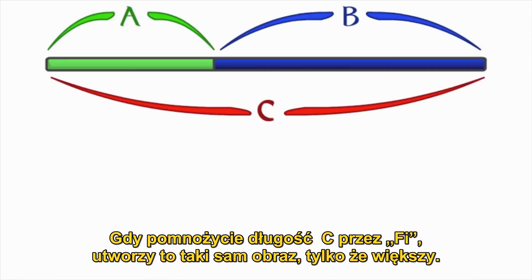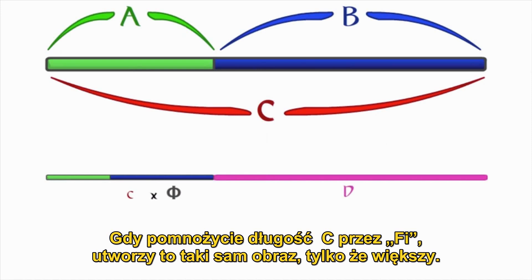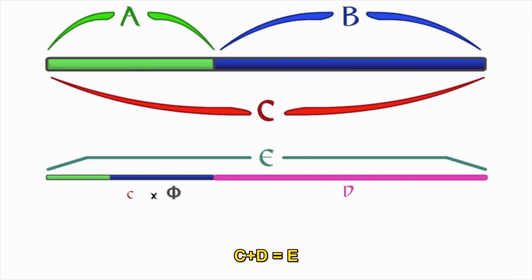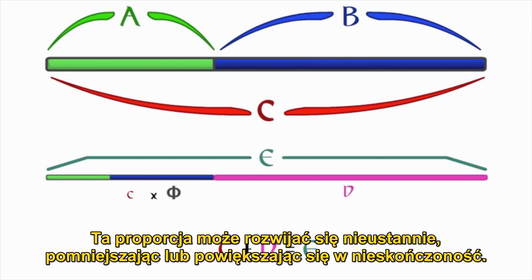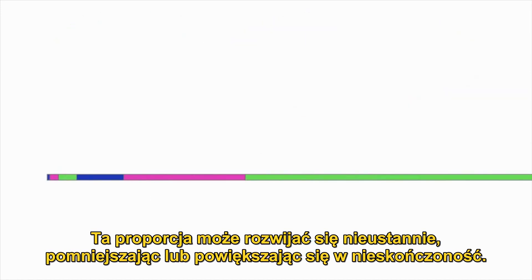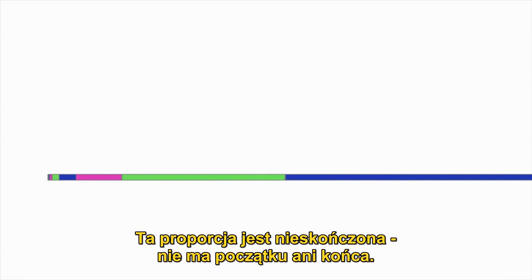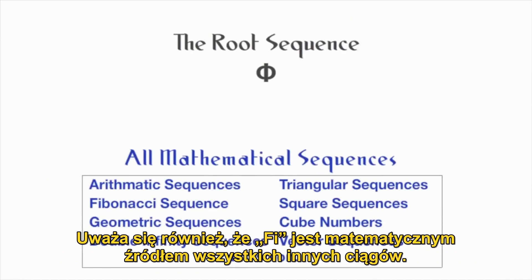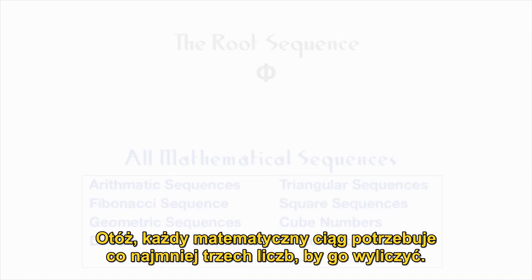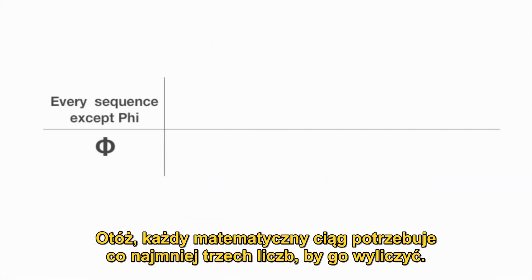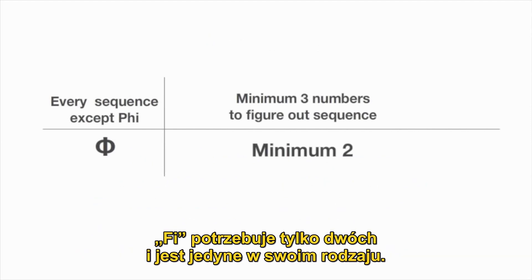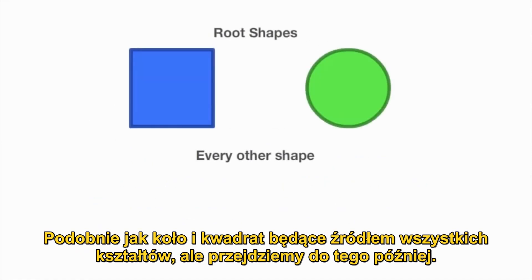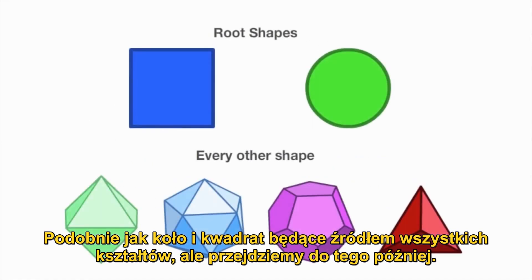If you multiply the length of C with Phi, it will create the exact same image, only bigger. C and B is equal to E. This ratio could then span on forever, going smaller and smaller or bigger and bigger, forever. This ratio is infinite — it has no beginning and no end. It is also believed that Phi is the mathematical root of all other sequences. Every mathematical sequence in existence needs the minimum of three numbers to figure out the sequence, but Phi only needs two. It is the only one, similar to how the circle and square are the source of all shape.